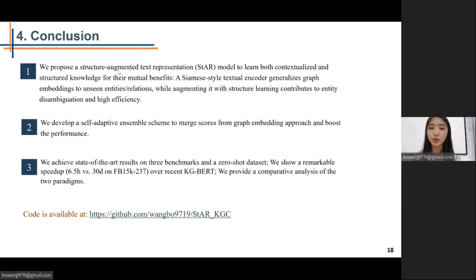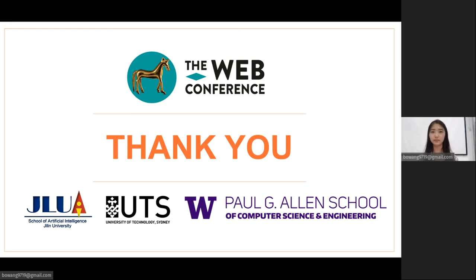In conclusion, our contribution can be summarized into the following three points. First, we propose a structured augmented text representation model to learn both contextualized and structure knowledge for their mutual benefits. Second, we further develop a self-adaptive ensemble scheme to merge scores from graph embedding approach and boost the performance. Finally, we achieve state-of-the-art results and show a remarkable speed-up over recent KG-BERT. Also, we provide a comparative analysis of the two paradigms. We are excited to share this work out, and the open source code is available at GitHub. Welcome to check it out if you are interested. Thanks for your attention.